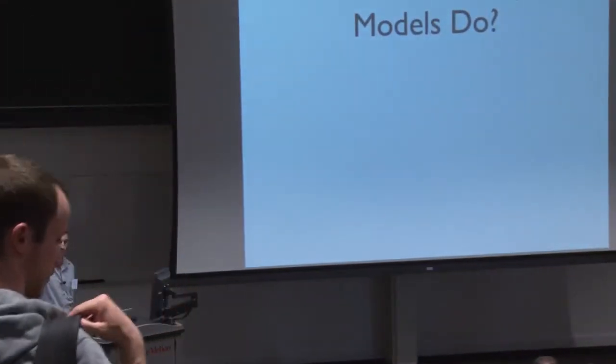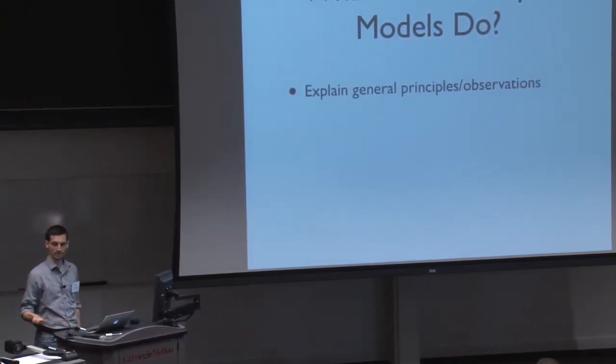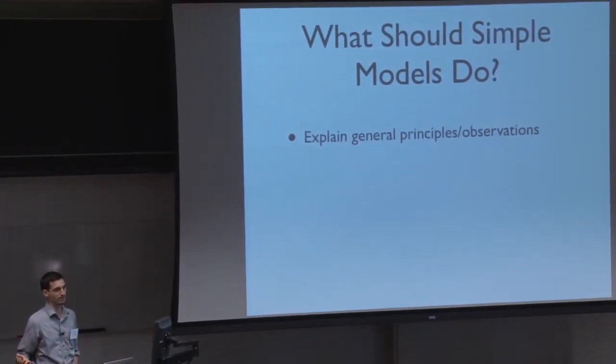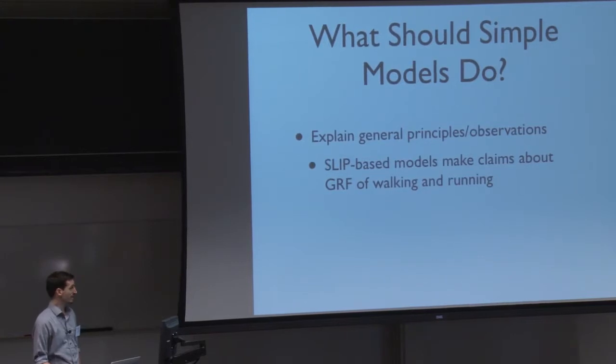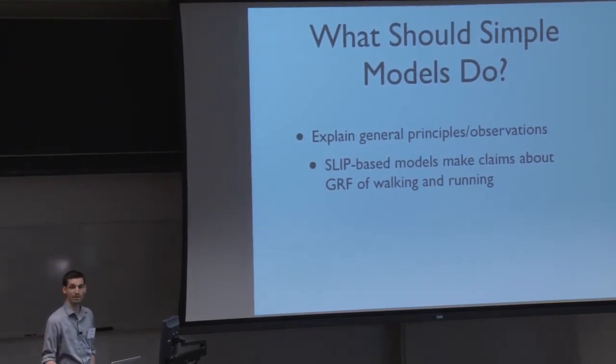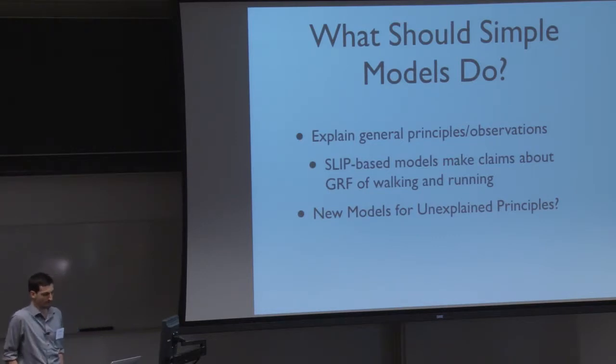So, I wanted to start with a question. What should simple models do for us, for locomotion? One thought is that they should be able to explain general principles and observations, perhaps across the animal kingdom, perhaps as well as robots. And one example of that are the SLIP-based, the spring-loaded inverted pendulum models, and the extensions thereof, like the bipedal SLIP, that have been able to make claims about ground reaction forces of both walking and running, that are somewhat universal in nature. But what about a need for new models, new simple models for other unexplained principles? And I'm sure there are many. You know, there's many that are being discussed here.